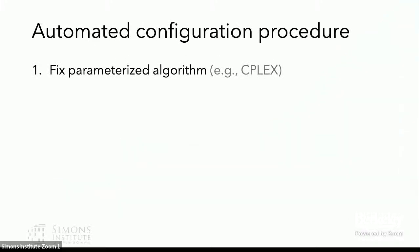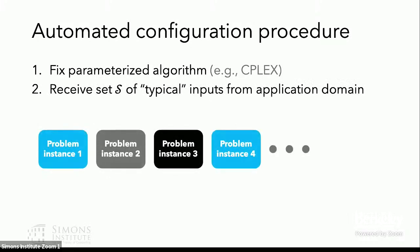So what would this look like? How might we hope to use machine learning in the context of algorithm configuration? So first, we would fix some parametized algorithm, let's say CPLEX for integer programming. And we would receive a training set of typical problem instances from my specific application domain at hand. And a bit more firmly, we assume that this training set of typical problem instances is sampled from some unknown application-specific distribution. So, for example, this could be a distribution over the scheduling problem an airline has to solve day after day. My training set is the set of all scheduling problems an airline has to solve over the course of a year.